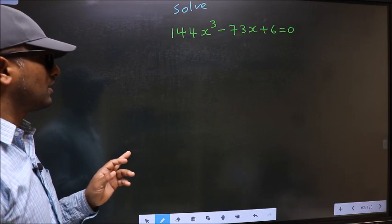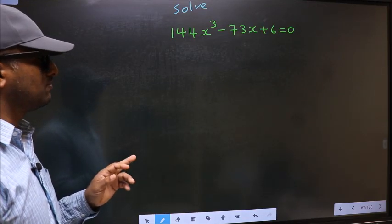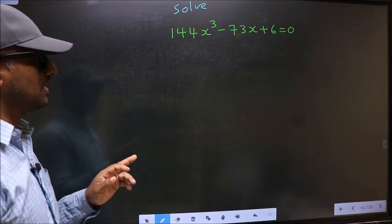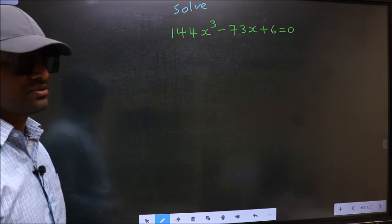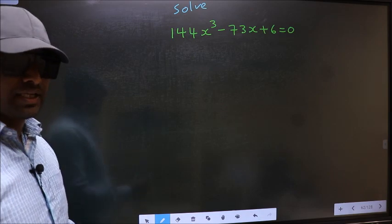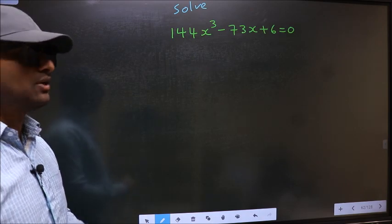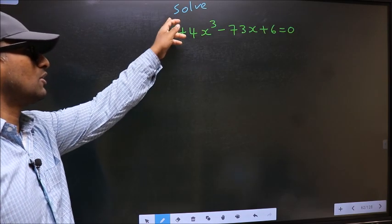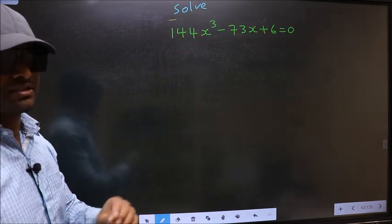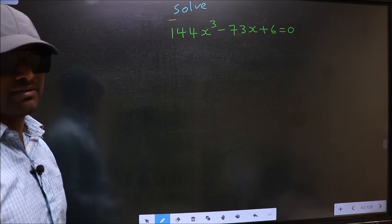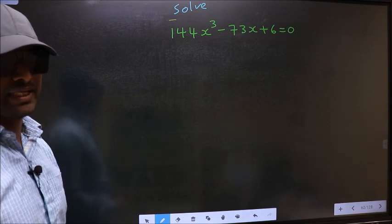Solve 144x³ minus 73x plus 6 equal to 0. We are told to solve, which means we should get the values of x.